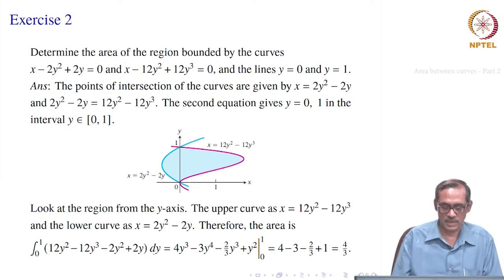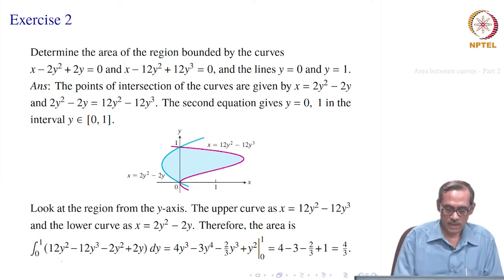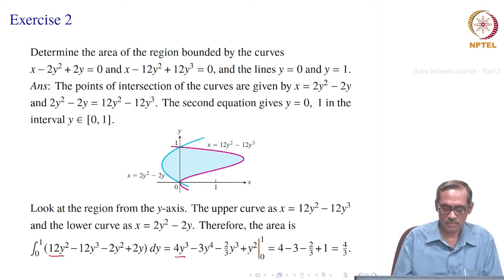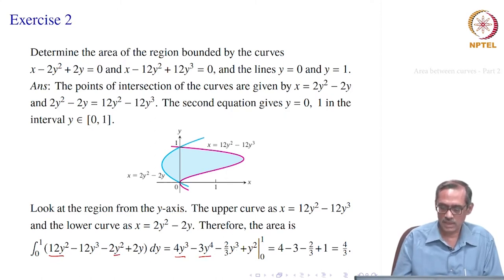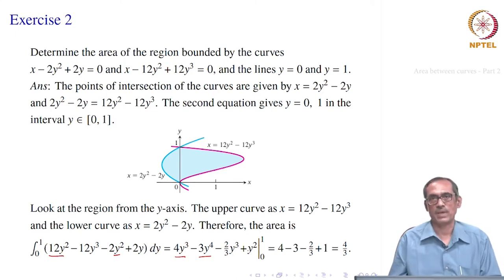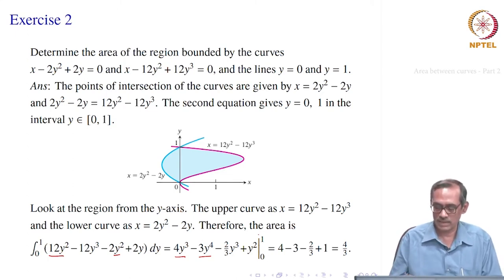We write that as the integral of 12y squared minus 12y cubed minus 2y squared plus 2y. Now, 12y squared integrates to 4y cubed, 12y cubed integrates to 3y to the fourth, 2y squared integrates to (2/3)y cubed, and 2y integrates to y squared. Evaluating this at 0 and 1, we finally get the answer as 4 divided by 3.